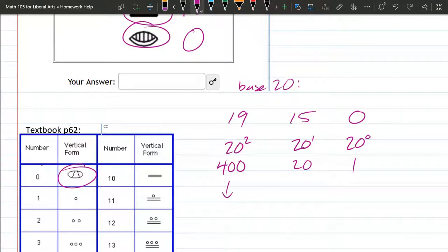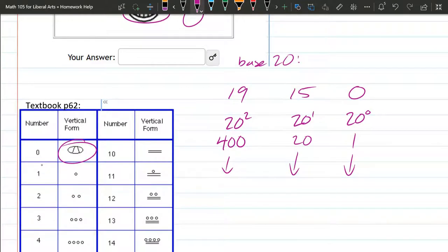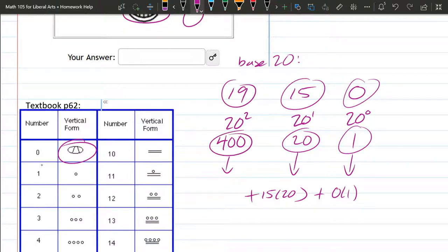What do all of these contribute? Well, we have zero ones, zero times one contributes zero. We have 15 twenties and 19 four-hundreds.